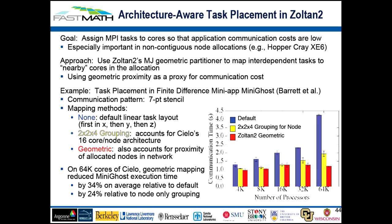Architecture-aware capabilities: the multi-jagged geometric partitioner has been used to map independent tasks to nearby cores accounting for the actual connectivity of the parallel system, introducing substantial efficiencies particularly at high core counts, as shown in examples on the right compared to not accounting for that.